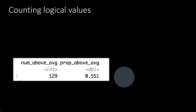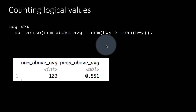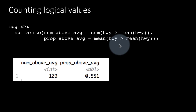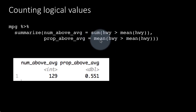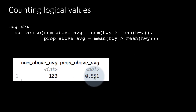Similarly, if you want to find the proportion of elements above average, you can take the mean of the Boolean values. Since TRUE is 1 and FALSE is 0, the mean is equivalent to the sum divided by the total number of elements. This tells us that 0.551, or 55.1%, of the highway values are above the mean — which corresponds to those 129 values.